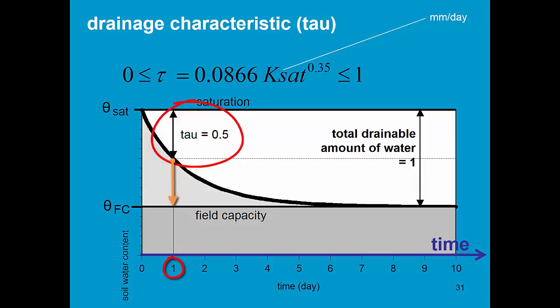In this example, with tau is 0.5, 50% of the water will drain on the first day.